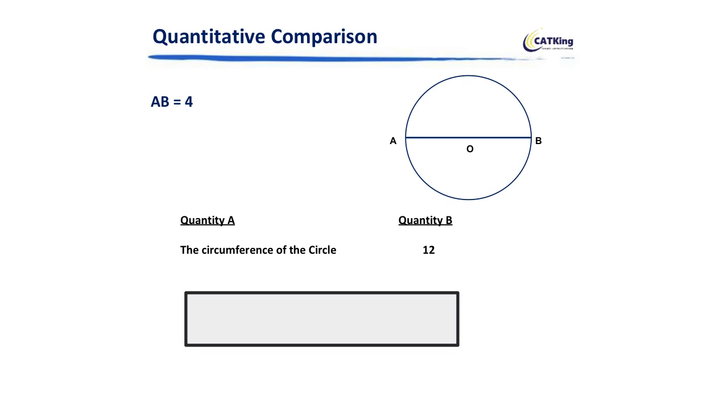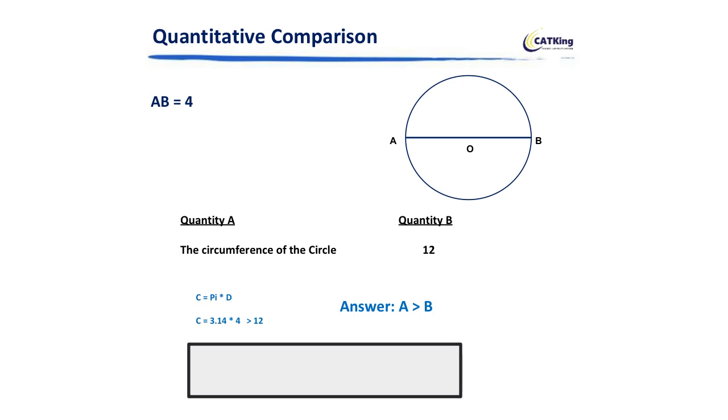For people who don't know the formula of circumference of the circle, ensure you revise all your formulas of geometry and arithmetic because it's very important when it comes to quantitative comparison as well as data sufficiency questions. So circumference of the circle by formula is given by π D, and the value of π is 3.14.